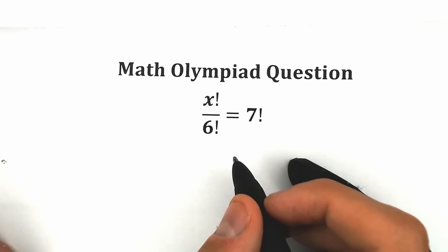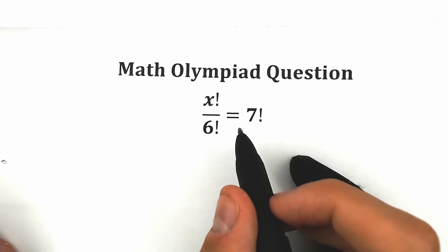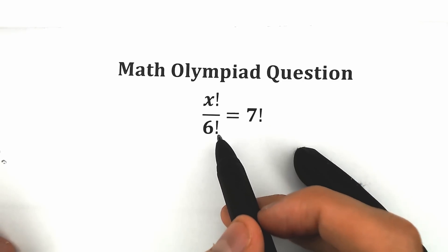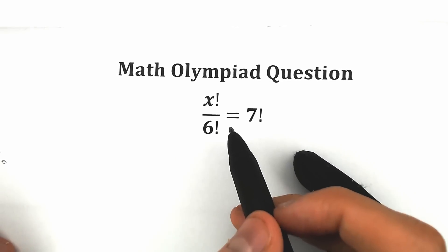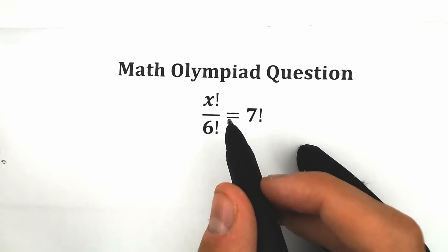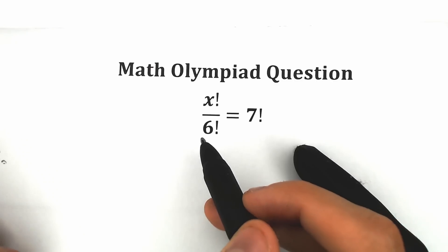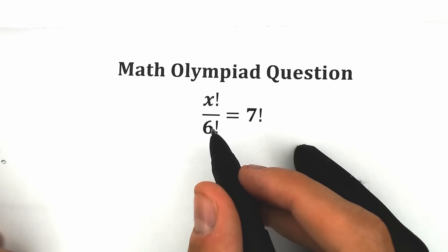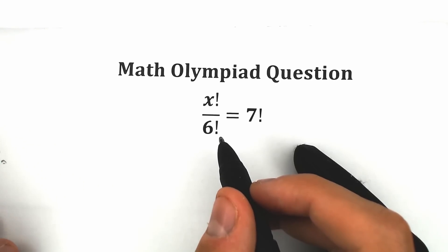Hello everyone, happy to see you here on my channel. I'm Mathematics, and today we have a really interesting math challenge with factorials. We have x factorial over 6 factorial equal to 7 factorial, and we need to find x from this equation. You can pause the video and try to solve this challenge yourself, because this is a very tricky challenge — a lot of students make this mistake, and I will show you this mistake in just one minute.